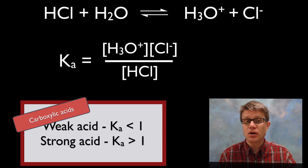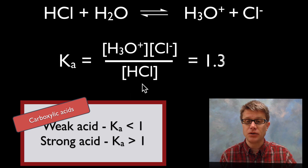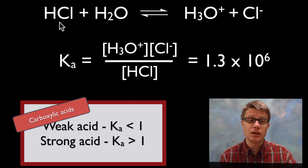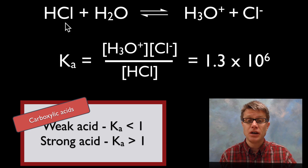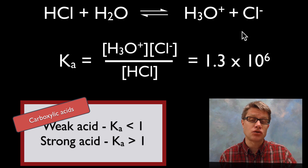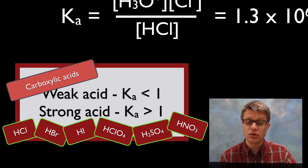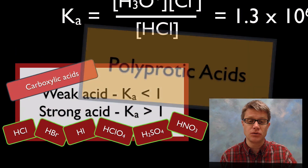If we look at a strong acid — hydrochloric acid combining with water — its Ka value is an incredibly large number. That means hydrochloric acid is essentially all donating its protons, shifting entirely to the right. If Ka is ever greater than 1, you've got yourself a strong acid. In AP Chemistry there are simply 6 strong acids to memorize, including hydrochloric acid and sulfuric acid.